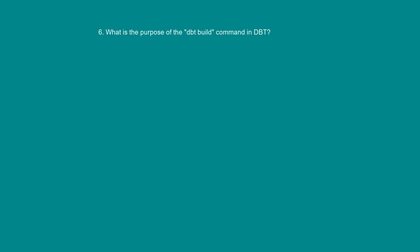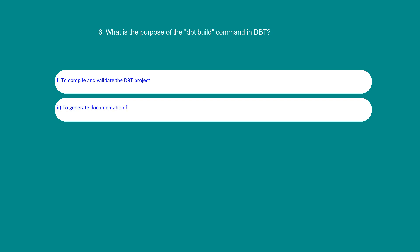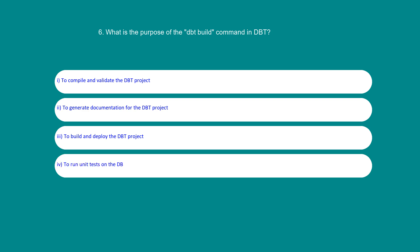What is the purpose of the dbt build command in dbt? Option 1: To Compile and Validate the dbt project. Option 2: To Generate Documentation for the dbt project. Option 3: To Build and Deploy the dbt project. Option 4: To Run Unit tests on the dbt models. The answer is 1: To Compile and Validate the dbt project.